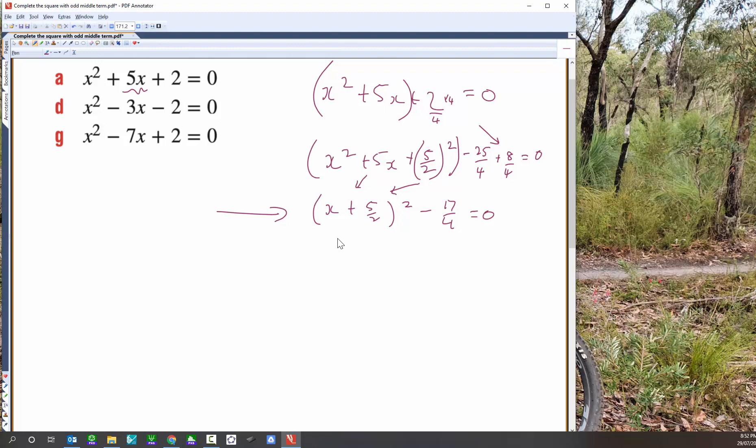Yeah, look, we would solve this using either method to factorise a null factor law. I'm going to solve it using that inverse operations method. So we'll say that it's x plus 5 on 2 all squared equals 17 on 4. So I've just added 17 on 4 to both sides. Now what I'm going to do is root this side and root this side, and recall that it's plus or minus when I do this move.